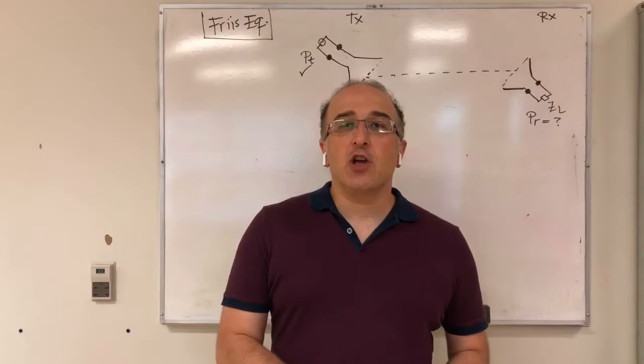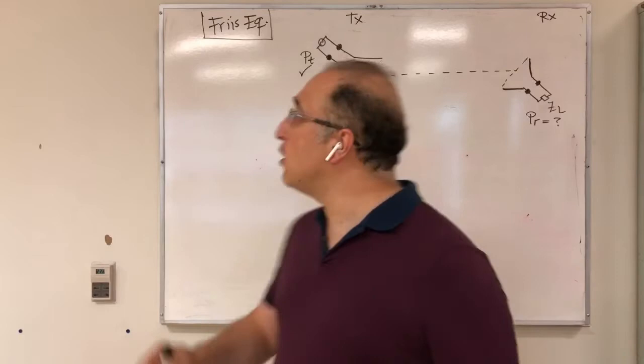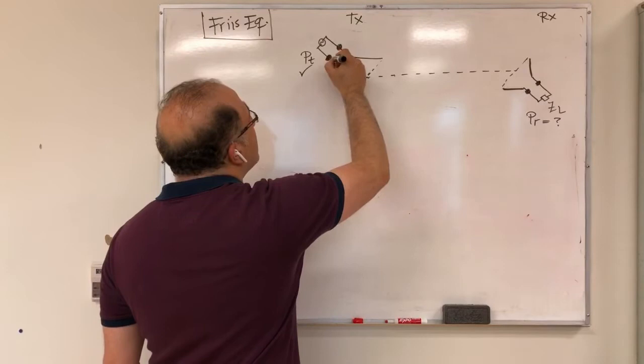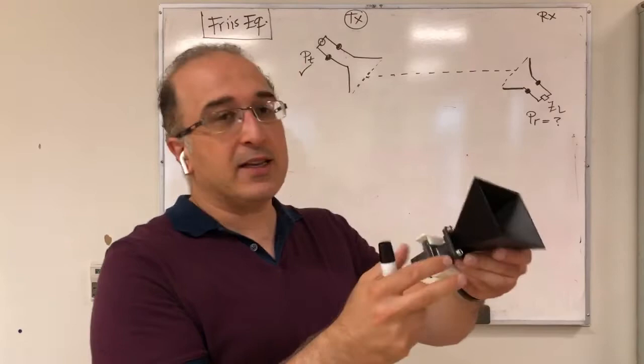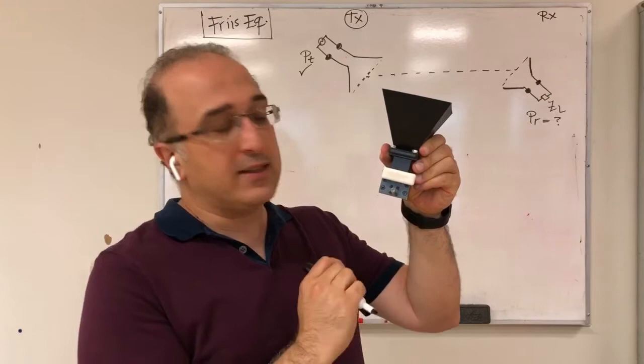Now that we've finished talking about polarization loss factor, let's talk about an important equation called the Friis transmission equation. In this equation, I'm assuming I have a transmit antenna TX with a port — imagine a coaxial cable port where I can feed the antenna — and I'm connecting a source that provides power P_T.